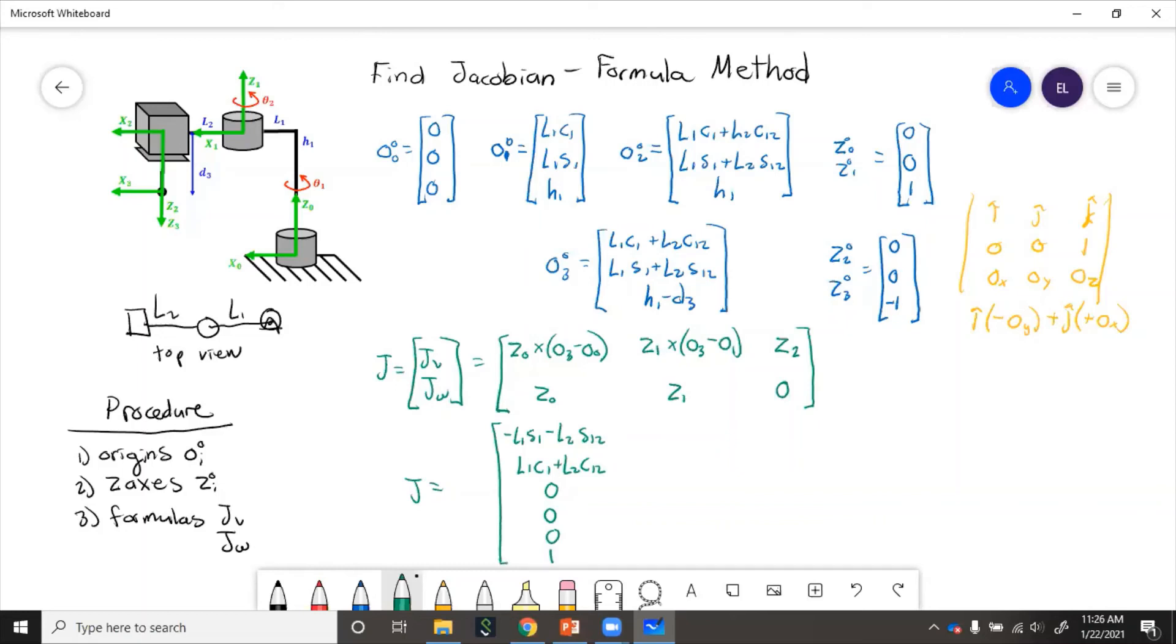Then we got this one in the bottom because z0 is just 001. So then similarly, for the next joint, joint two, we'll have o3 minus o1, which is basically just o3 minus the o1 stuff.